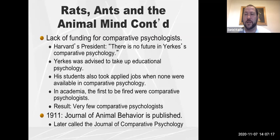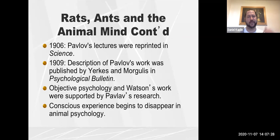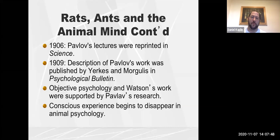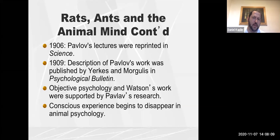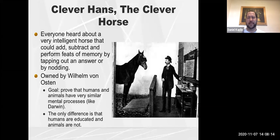Despite being heavily criticized, comparative psychology continued and eventually blossomed. In 1911, a journal called the 'Journal of Animal Behavior' was published — later renamed the 'Journal of Comparative Psychology' — which created a shift. Pavlov's work on classical conditioning was reprinted in the journal Science, and a description of his work was published in the Psychological Bulletin, putting more awareness on comparative psychology and animal research.